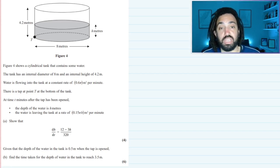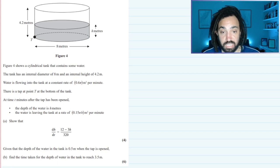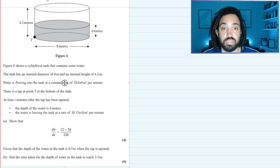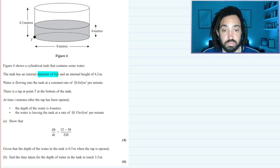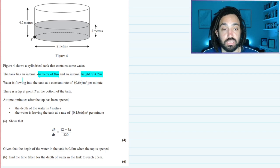Okay so what do we have? We have a cylindrical tank that contains some water. The tank has an internal diameter of 8 meters. I'm going to highlight the key information and an internal height of 4.2 meters. Water is flowing into the tank at a rate of 0.6π meters cubed per minute. There's a tap at the bottom of the tank at time t minutes after the tap has been opened.